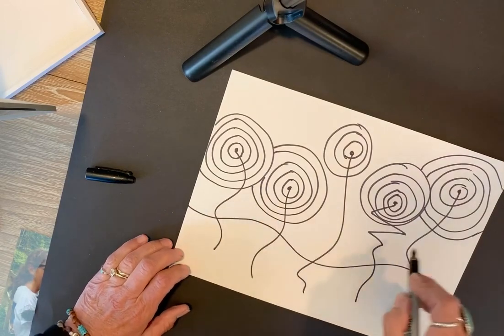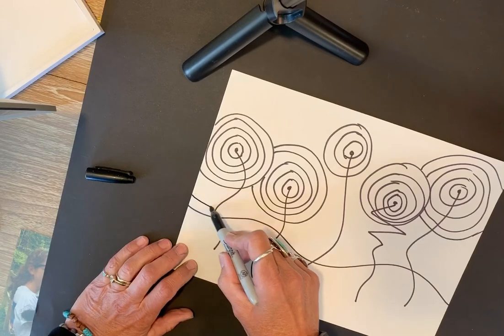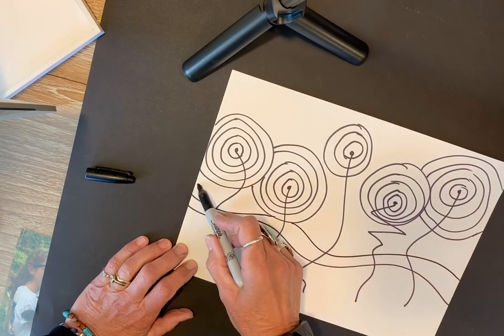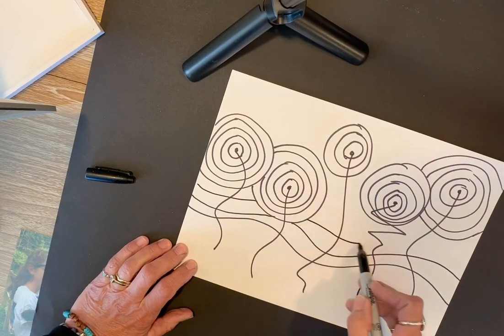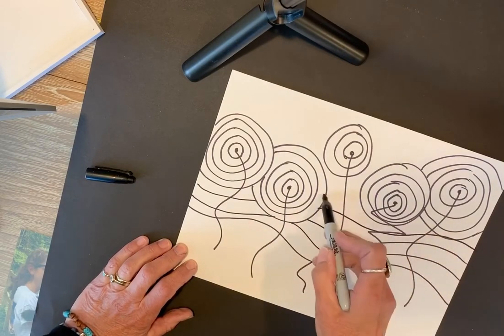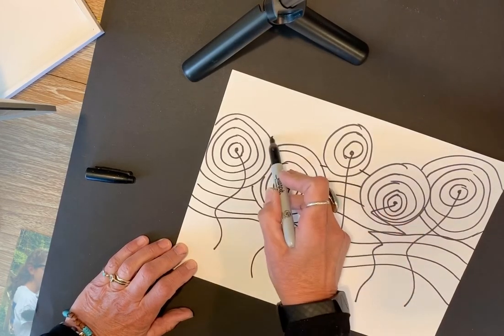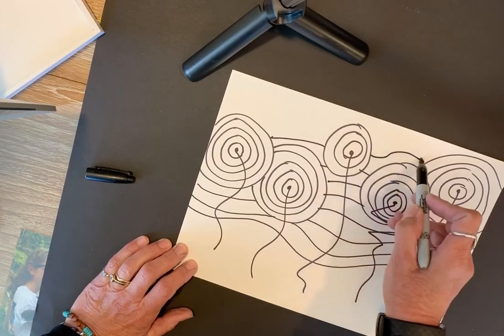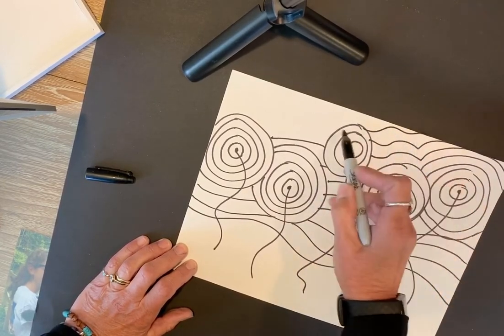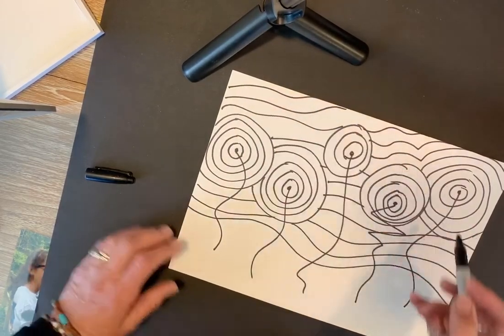Now, to make the background fun and interesting, I like to make what are called concentric lines. You just follow the contour of that first horizon line that you drew. And what it gives you are more places where you can add color. Just make the lines follow the contour of the shape of the flower. And it'll make your background really interesting.